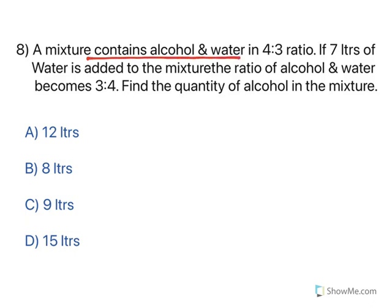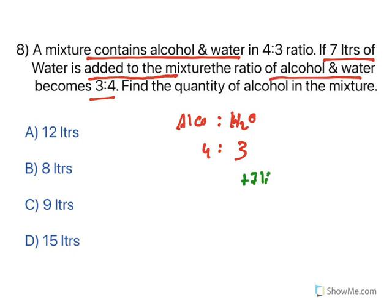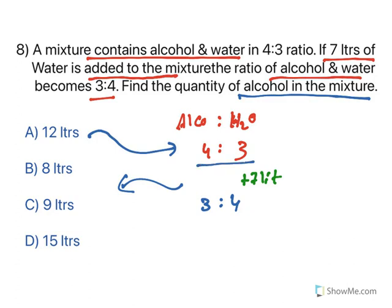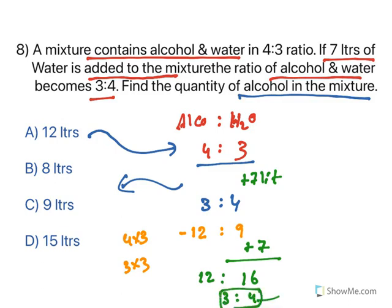Now the last and interesting one. A mixer contains alcohol and water in a 4:3 ratio. If 7 liters of water is added to the mixture, the ratio of alcohol to water becomes 3:4. Find the quantity of alcohol. In such questions, work from the options. Assume alcohol is 12 liters. In ratio 4, the factor is 3, so water is 3 × 3 = 9 liters. You add 7 liters to the water, it becomes 16 liters. So the new ratio is 12:16 = 3:4. That is exactly what is being asked, so the quantity of alcohol is 12 liters.